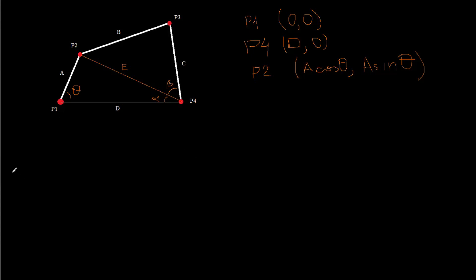By the law of cosines we know that E squared is equal to A squared plus D squared minus 2AD cosine of theta. So with this formula we can find E.